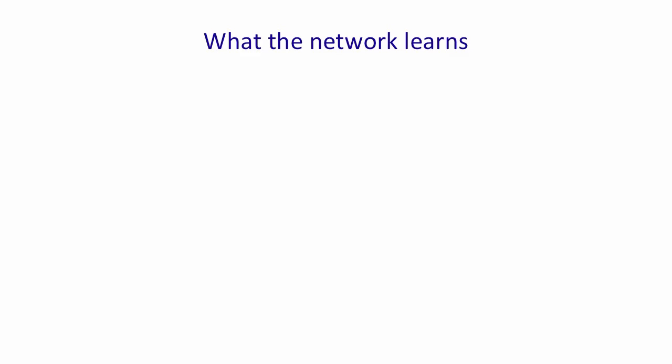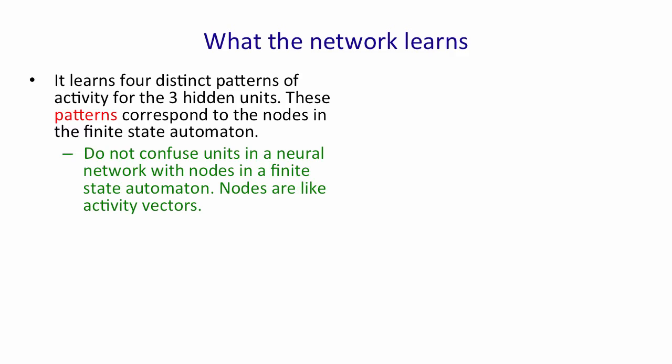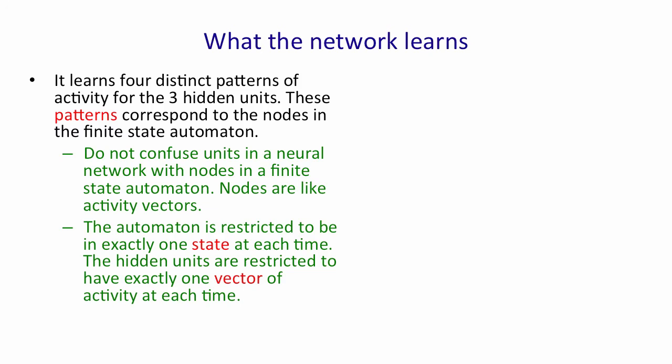It's interesting to look at what the recurrent neural network learns. It learns four distinct patterns of activity in its three hidden units, and these patterns correspond to the nodes in the finite state automaton for binary addition. Do not confuse the units in a neural network with the nodes in a finite state automaton. The nodes in the finite state automaton correspond to the activity vectors of the recurrent neural network. The automaton is restricted to be in exactly one state at each time. And similarly, the hidden units are restricted to have exactly one activity vector at each time in the recurrent neural network.